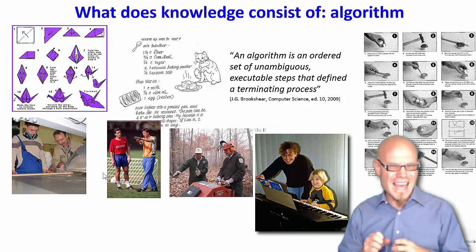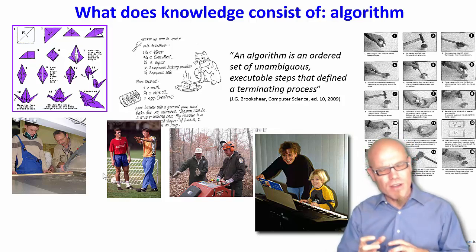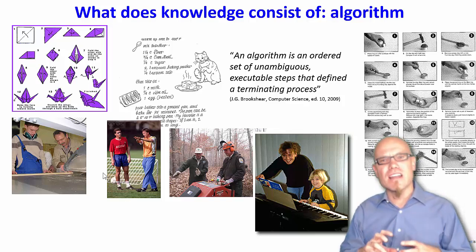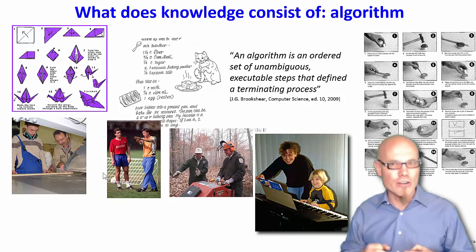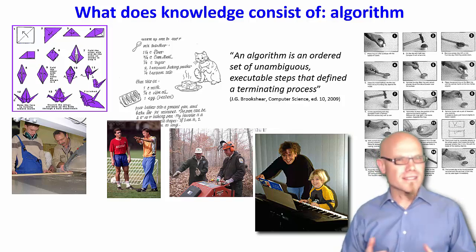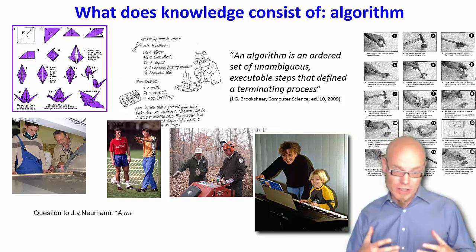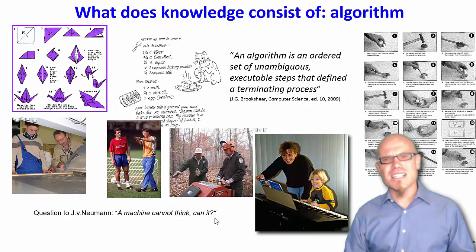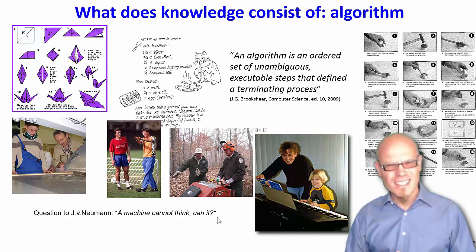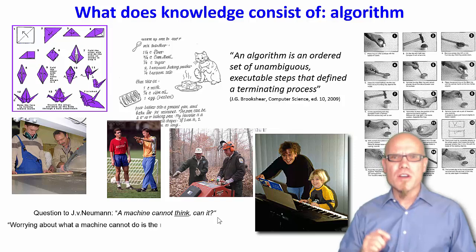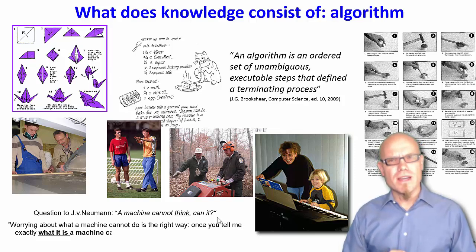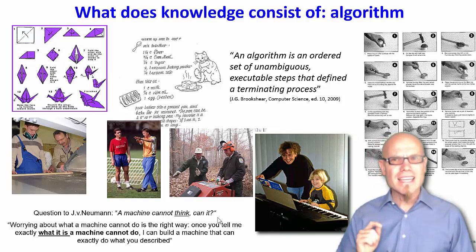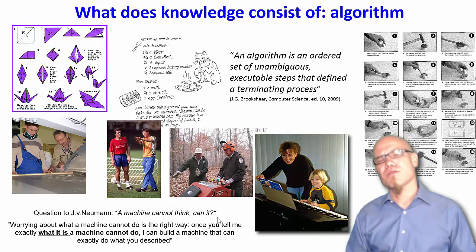Once we have algorithms, once we have knowledge, we can embed them into physical structures and create technologies. But first we have to understand what this algorithm consists of — this algorithm that addresses a typical need. For example, they once asked John von Neumann, a foundational and very important computer scientist, a co-inventor of what we nowadays call a computer: 'A machine cannot think, can it?' And his answer was: worrying about what a machine cannot do is the right way. Once you tell me exactly what it is a machine cannot do, I can build a machine that can exactly do what you described.